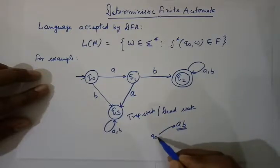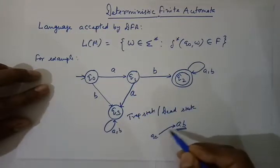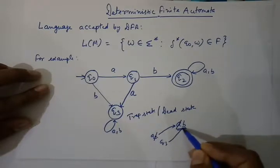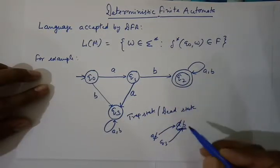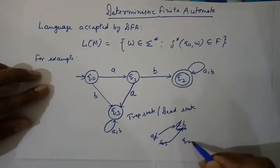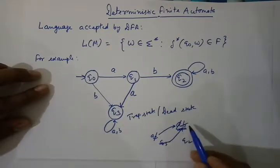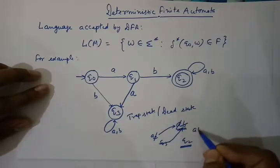From start state Q0, A is the input — from Q0 on A we move to Q1, our new state is Q1 and symbol A is consumed. From Q1 we get B as input — from Q1 on B we are in Q2, so our new state is Q2 and this symbol is also consumed. All input symbols are consumed, we are in state Q2 which is our final state, so string AB is accepted.